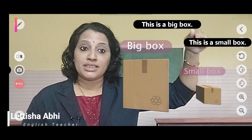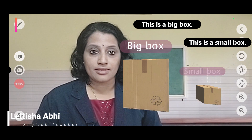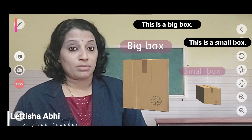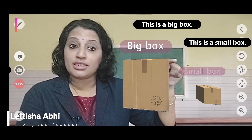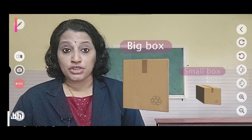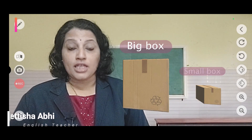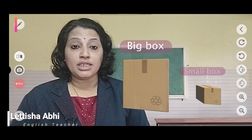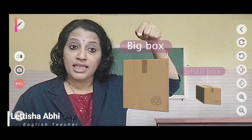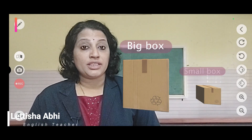Similarly, what is this? This is a small box. In this sentence, which is your describing word? Small. Small is your describing word, because it gives you more information about the size of this box. So, small is the describing word — it is giving us more information about the size of the box. Big and small are the describing words.